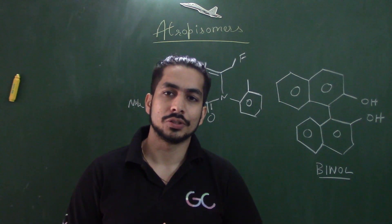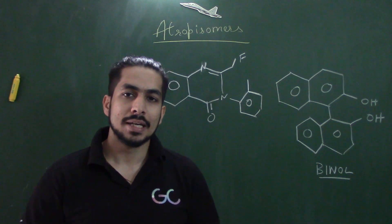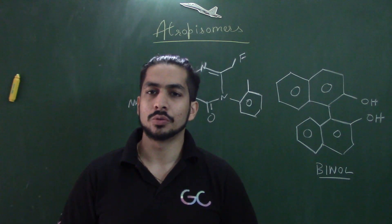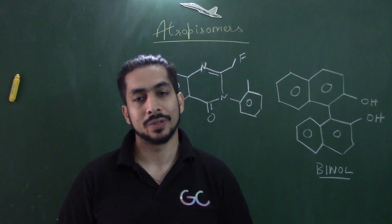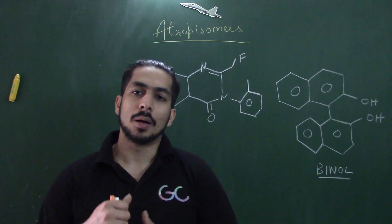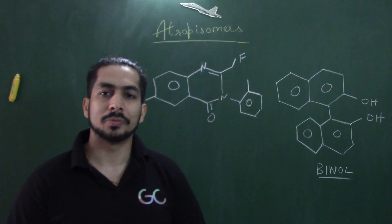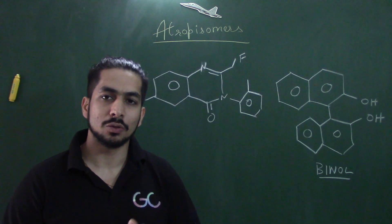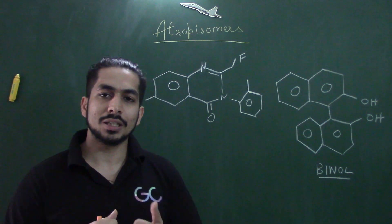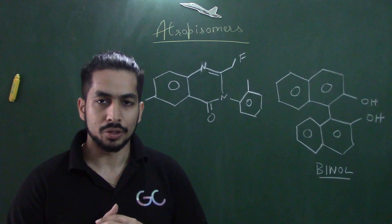Welcome to the channel. Today I'm introducing a very important topic: atropisomerism. It is recently gaining momentum in research and has been introduced in the GATE 2020-21 examination as a new topic. Atropisomerism is derived from the Greek word 'atropos,' which means 'the one which cannot turn.' This isomerism arises because of hindered rotation around a carbon-carbon bond.